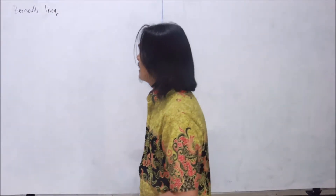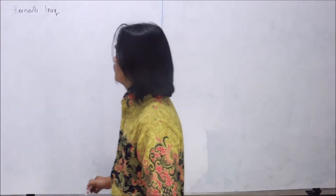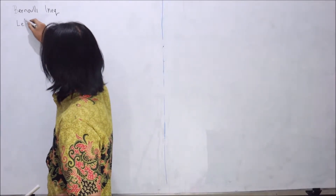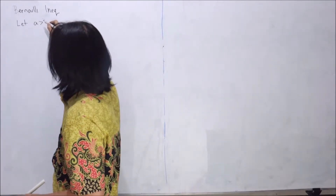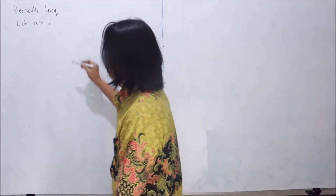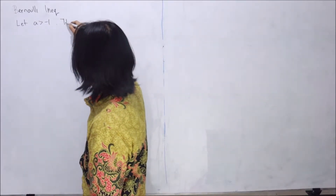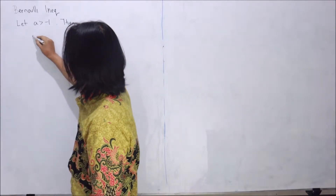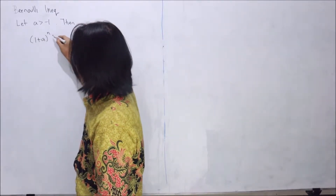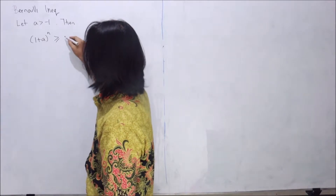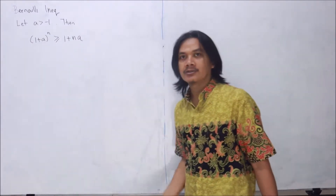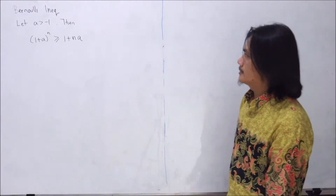The Bernoulli inequality says that if we have a greater than minus 1, then 1 plus a to the power of n is greater or equal to 1 plus n times a. That's what the inequality says.